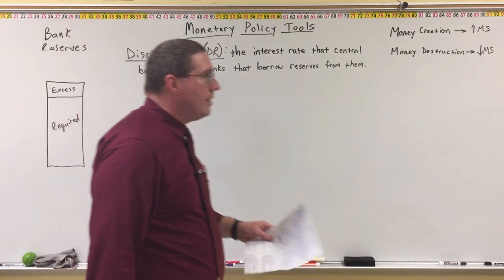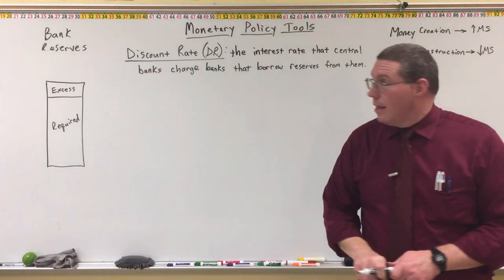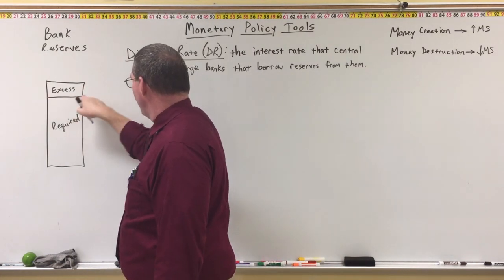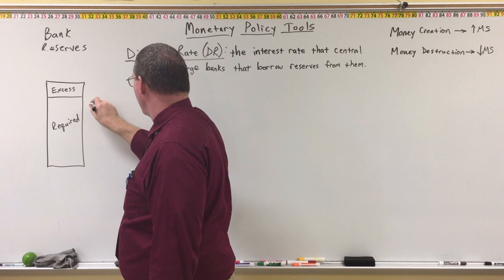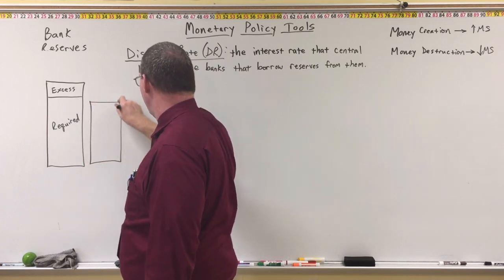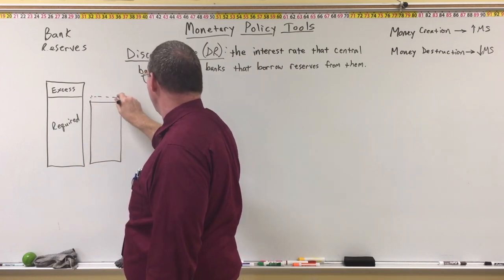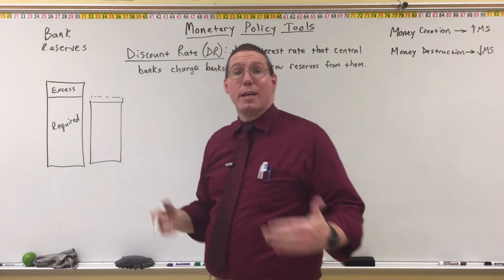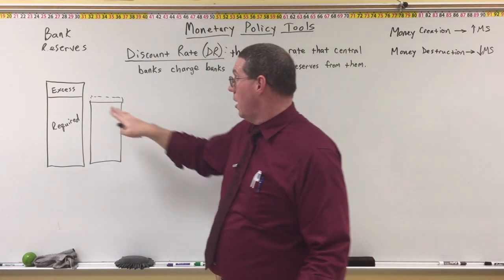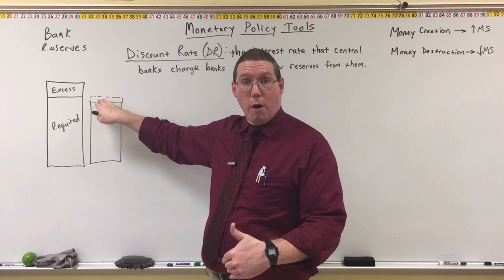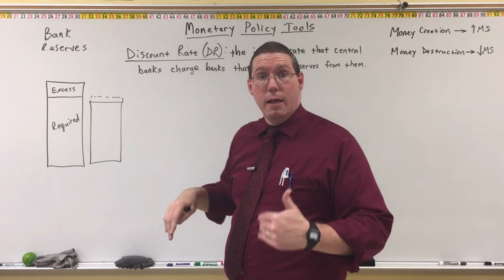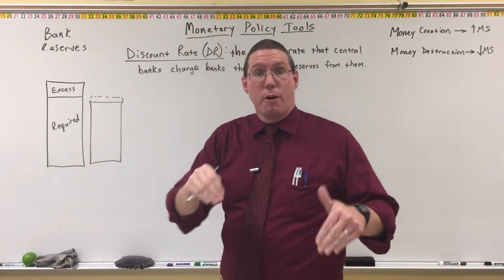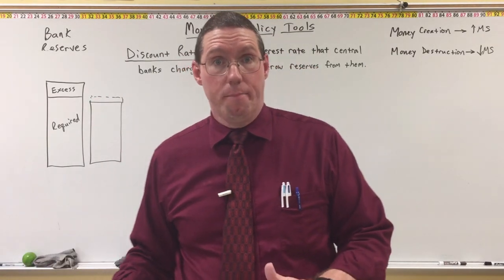Here's how it goes. If a bank's level of reserves falls below the required reserves level, they are missing a little bit of money. They'll get in big trouble if they don't meet their reserve requirement — usually every 24 hours, so let's say by midnight. The bank will get in big trouble if they don't have all their required reserves in their account with the Fed by midnight.